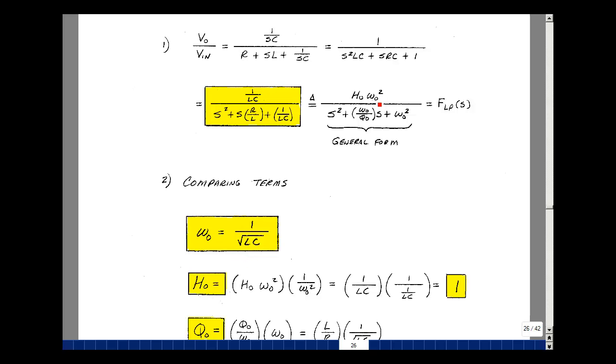The term H naught omega naught squared here is part of what this is, 1 over LC. So I want to extract out the H naught term, since I know what omega naught is. If I take this term H naught omega naught squared, and I multiply it by 1 over omega naught squared, then I get H naught.